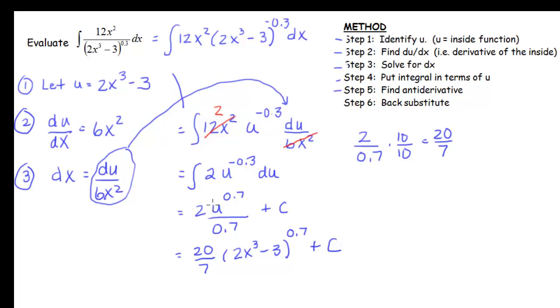Actually do the anti-derivative. So I have 2u^0.7 divided by 0.7 + C and then I went ahead over here and simplified that fraction because I don't want to leave decimals in the denominator. So I can multiply by 10 to make this denominator be a whole number and I end up with 20/7. So I have (20/7)(2x³ - 3)^0.7 + C and then to check all you would need to do is take the derivative. Here's my derivative and it does check.